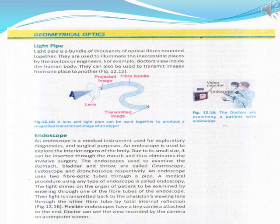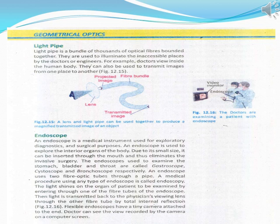ان کو بالترتیب gastroscope، cystoscope اور bronchoscope کہا جاتا ہے۔ Endoscope ایک pipe ہے جس کے اندر دو fiber optic tubes استعمال ہوتے ہیں۔ کسی بھی endoscope کو استعمال کرنے کا medical طریقہ کار endoscopy کہلاتا ہے۔ Endoscope کے ایک tube سے روشنی داخل ہوتی ہے اور مریض کے اعضاء سے ٹکرا کر total internal reflection کے ذریعے دوسری tube سے باہر آ جاتی ہے اور ڈاکٹر کے camera یا lens سے ٹکراتی ہے، جیسا کہ Figure 12.16 میں دکھایا گیا ہے۔